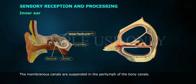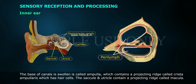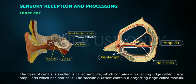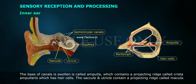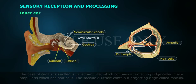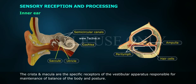Each semicircular canal lies in a different plane at right angles to each other. The membranous canals are suspended in the perilymph of the bony canals. The base of the canals is swollen and is called the ampulla, which contains a projecting ridge called crista ampullaris, which has hair cells. The saccule and utricle contain a projecting ridge called macula. The crista and macula are the specific receptors of the vestibular apparatus responsible for maintenance of balance of the body and posture.